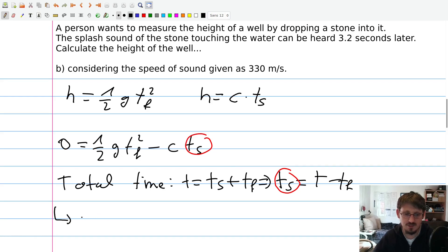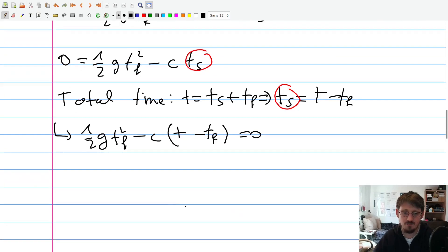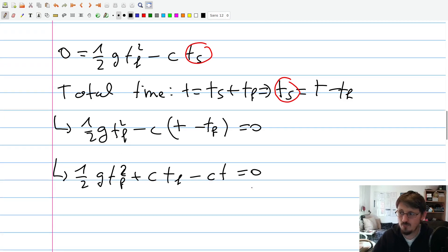What we have now is one half g tf squared minus c times (t minus tf) equal 0. Just this equation above. And now we can rearrange this formula a little bit. So we can write this equation, and we can write one half g tf squared plus c tf minus c t equal 0.